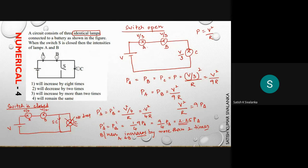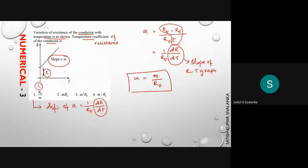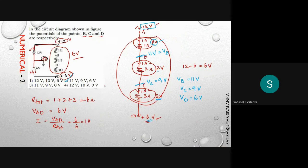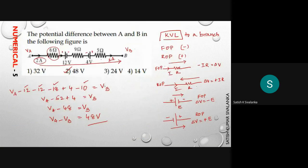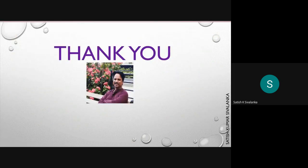For the previous question, the third option is the answer. For the temperature coefficient question, alpha = M/R_0 is the answer. For the second question, second option. For the first question, second option. These are the five numericals I have selected. The videos are expecting feedback from you in the comments box. Thank you very much.